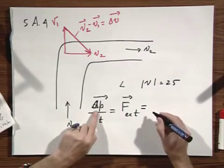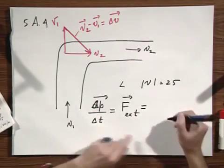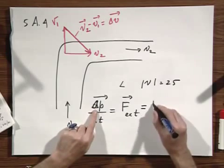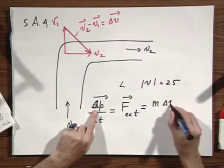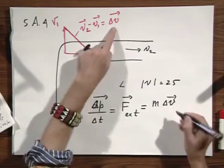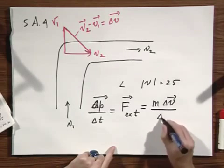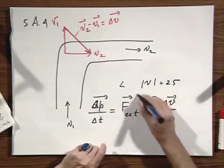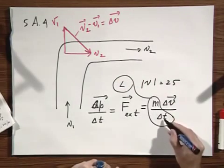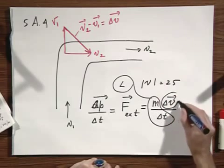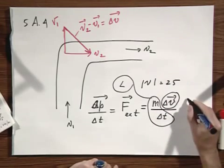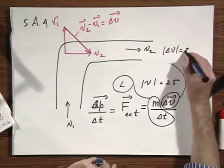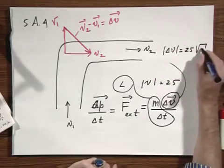What is delta P? In the limit, when delta goes to zero it becomes dP. Delta P equals m times delta V. And delta P over delta T gives us m over delta T times delta V. But m divided by delta T is L — the number of kilograms per second. The magnitude of delta V equals 25 times the square root of 2.